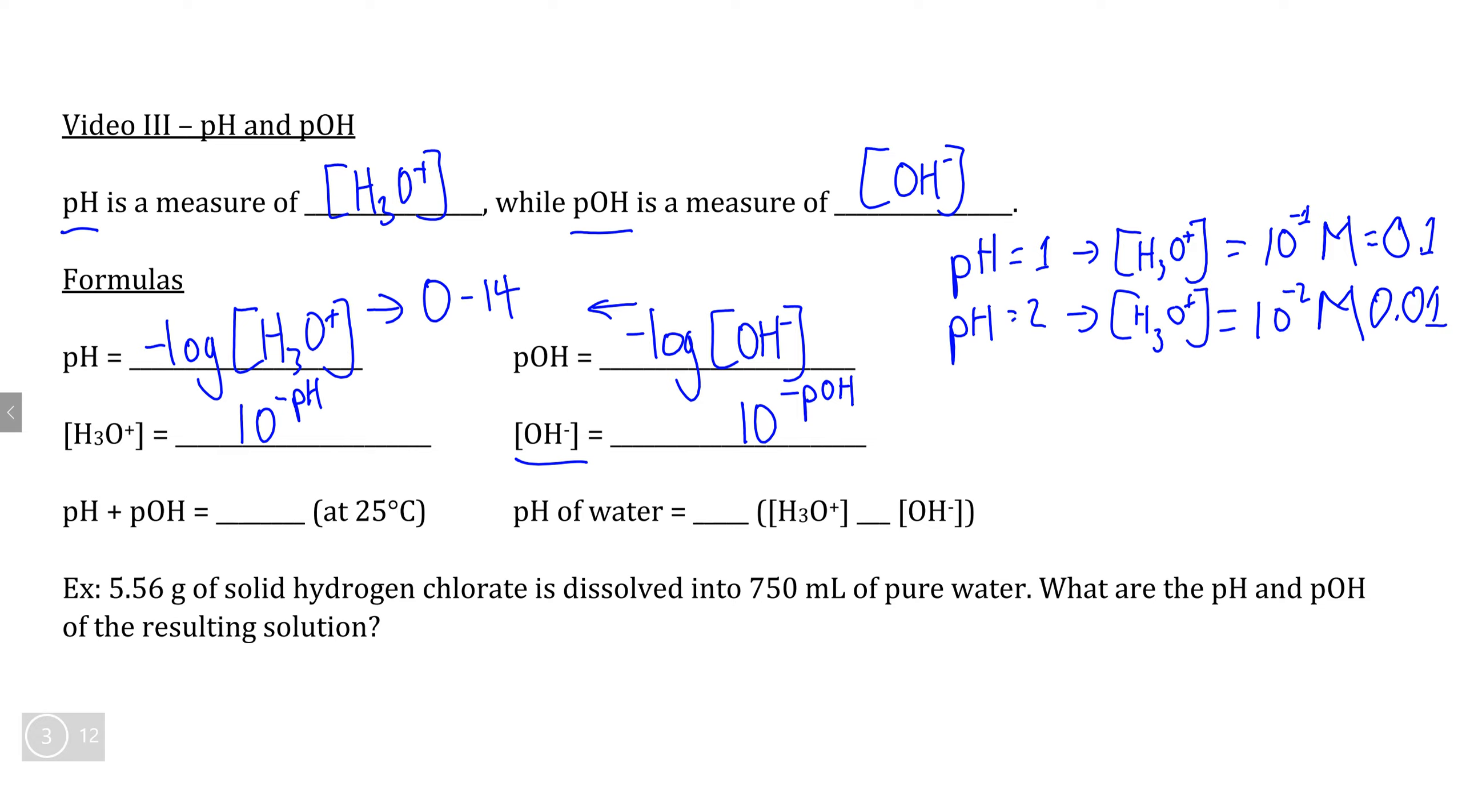Now, 0 to 14 as a range is not accidental, because for any given solution, if you add the pH and pOH together, this number will always total 14 as long as you are at 25 degrees Celsius.